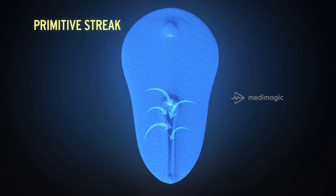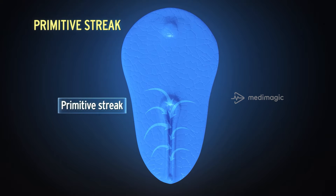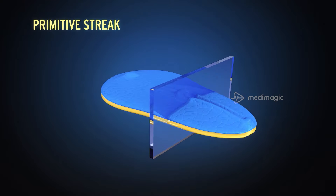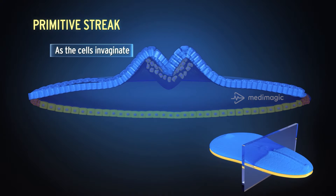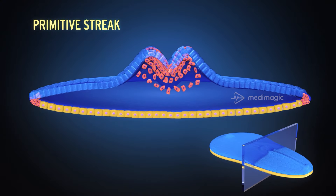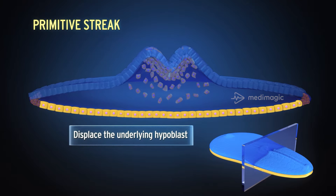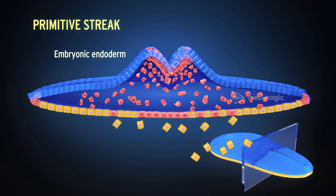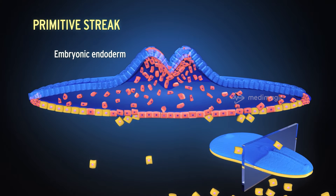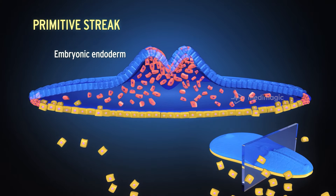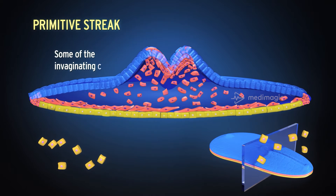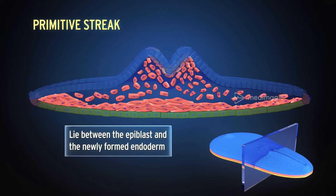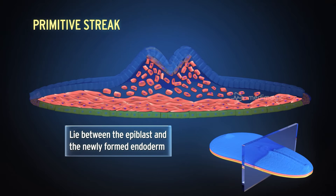The detached cells of the epiblast around the primitive streak invaginate into the primitive streak. As the cells invaginate, some cells displace the underlying hypoblast, forming the embryonic endoderm. Some of the invaginating cells from the primitive streak lie between the epiblast and the newly formed endoderm.